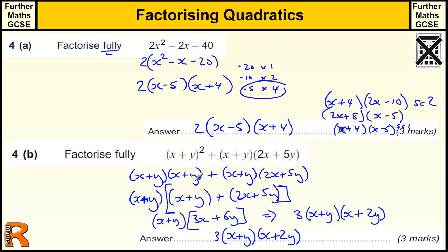OK, so that's the sort of quick way of spotting the (x + y) first. You could multiply the whole thing out, multiply all this out, multiply all this out, get everything together, and you would probably have something like 3x² + 9xy + 6y² when you've multiplied all that out,